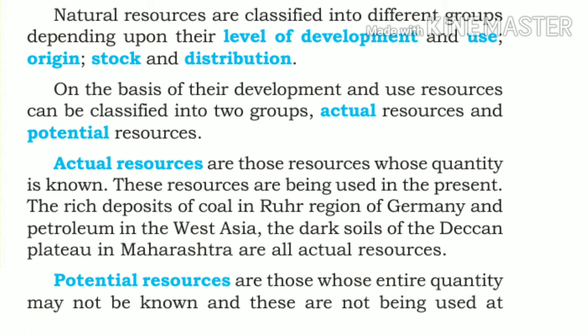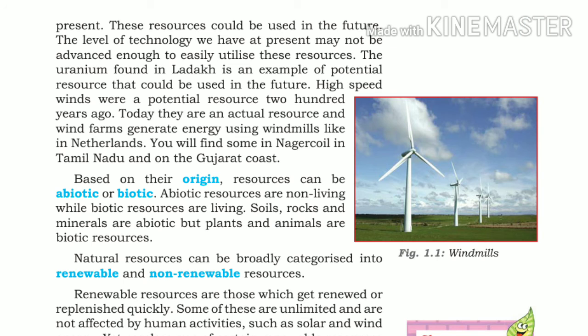High speed winds were a potential resource 200 years ago, but today they are used as a natural resource — wind farms generate energy using windmills, like in the Netherlands. You can also find wind farms in Nagarcoil in Tamil Nadu and on the Gujarat coast. These are examples of how potential resources can become actual resources.